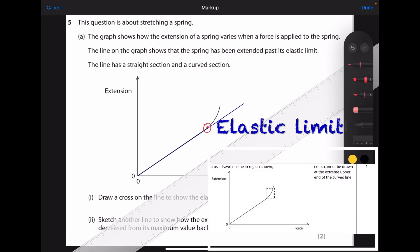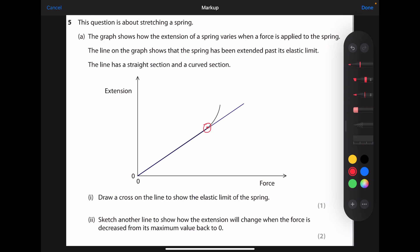The point at which the two lines start to move slightly away from each other, that point is the elastic limit. In part ii, sketch another line to show how the extension will change when the force has decreased from its maximum value back to zero.